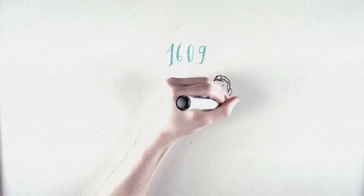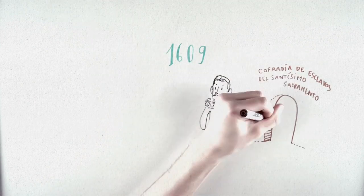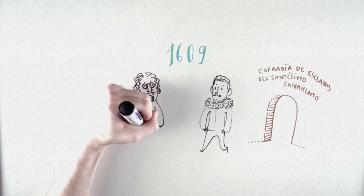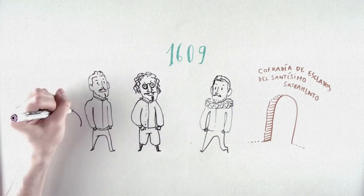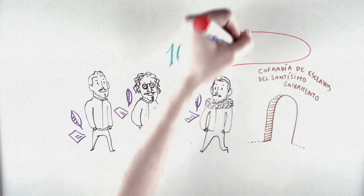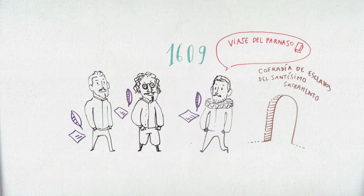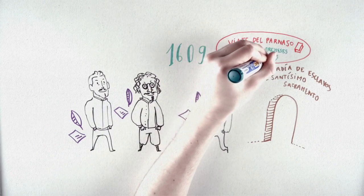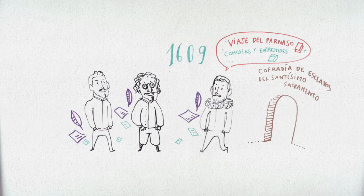In 1609, he entered the Brotherhood of the Slaves of the Most Holy Sacrament, to which Lope de Vega also belonged. He began to write the exemplary novels that appear in 1613, Viaje del Parnaso that would come out a year later, and the comedies and interludes.